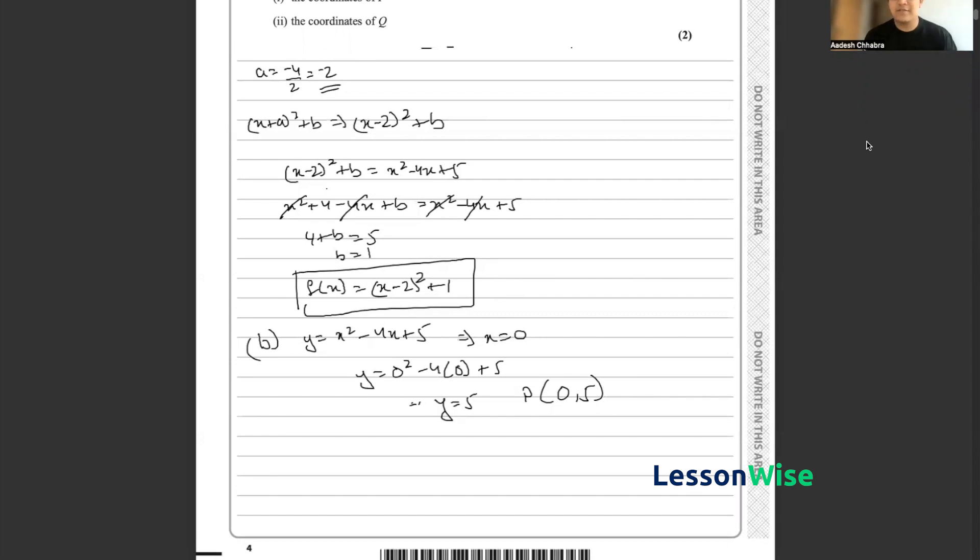Now all that's left to do is find the coordinates of q. We have been told that q occurs at the turning point of the equation. So to help find the turning point, we can utilize the completed square version of the equation that we calculated before.